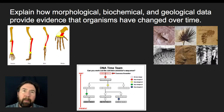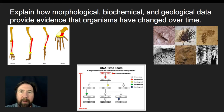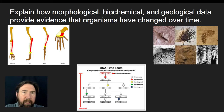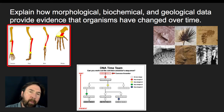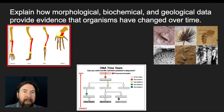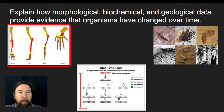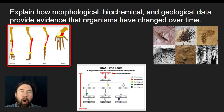Let's start with morphology, then talk about biochemistry, and then geological data. The idea of homologous structures: the forearm of a human, the forelimb of a dog, the forelimb of a bird, and the forelimb of a whale all have ultimately different functions.